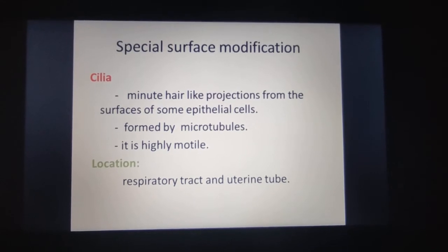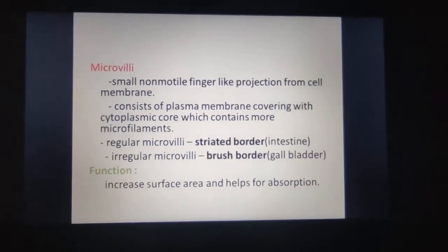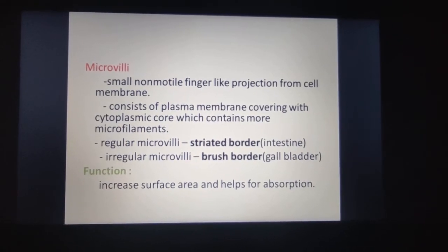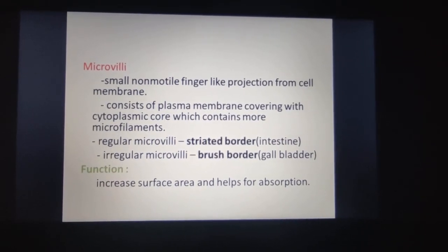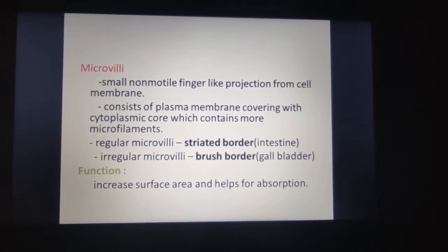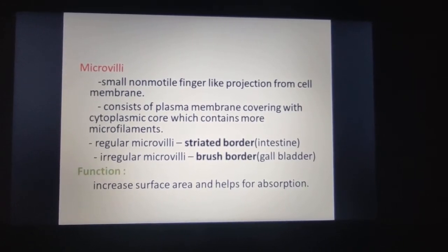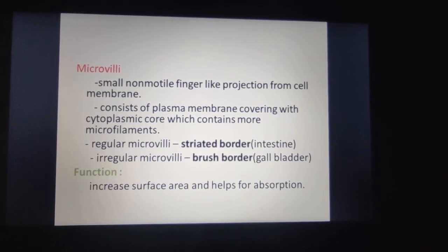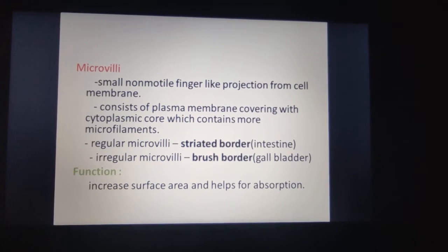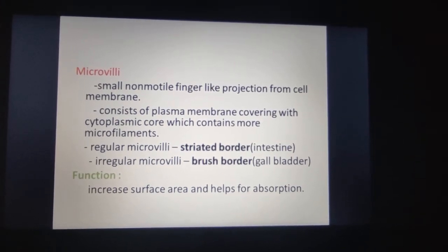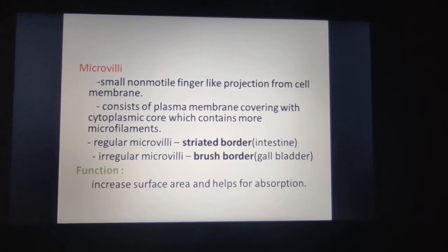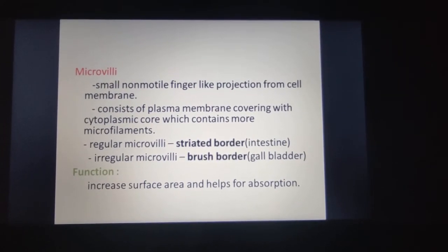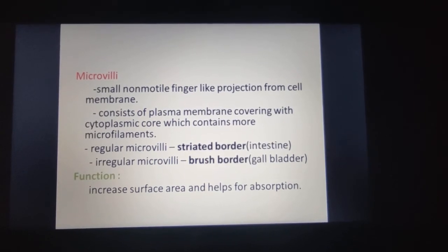Next, microvilli. There are two types: regular microvilli and irregular microvilli. Irregular microvilli have a brush border, seen in the gallbladder. Regular microvilli have a striated border, seen in the intestine. The key difference from cilia is that microvilli are small, non-motile, finger-like projections from the cell membrane.